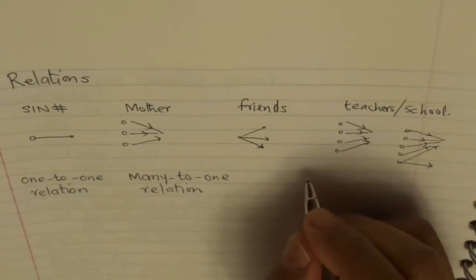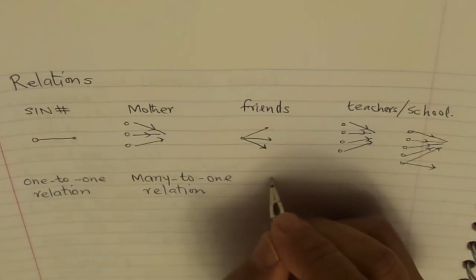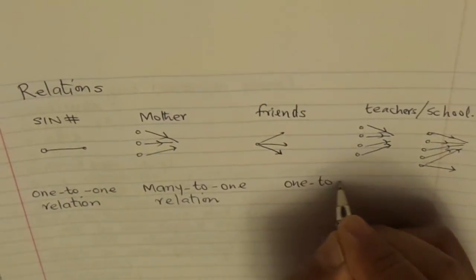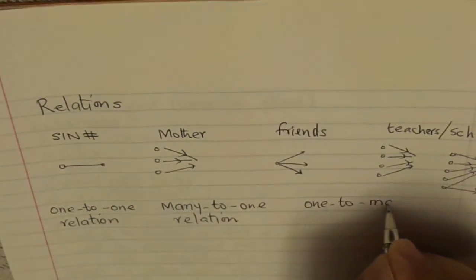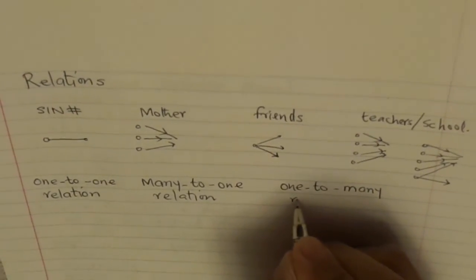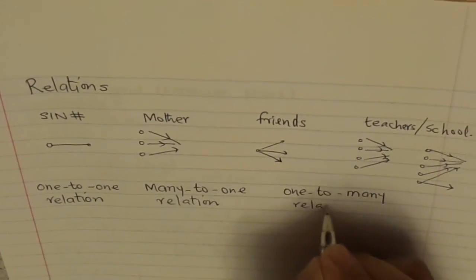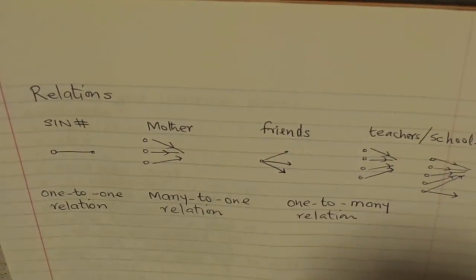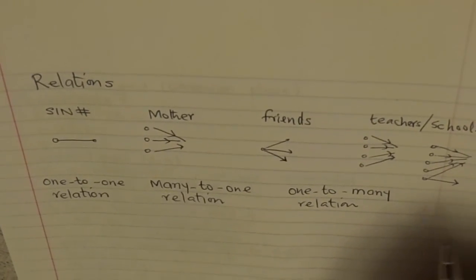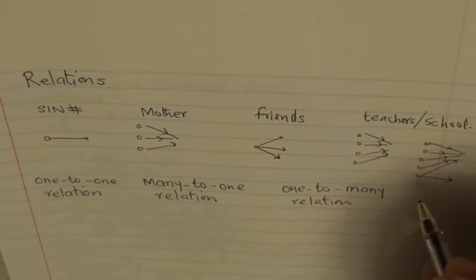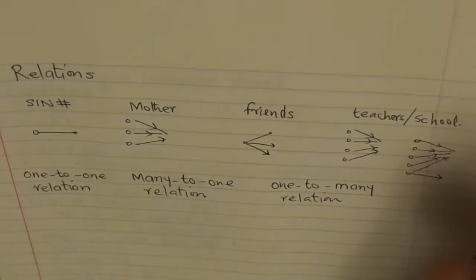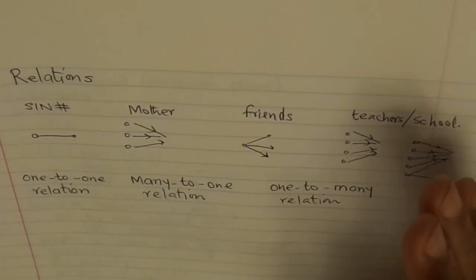Friends — that is a one-to-many relation. Similarly, employers and employees are either many-to-one or one-to-many.